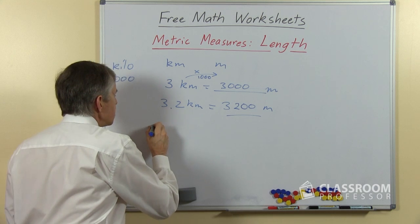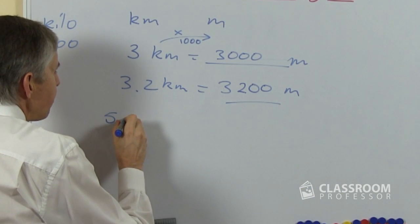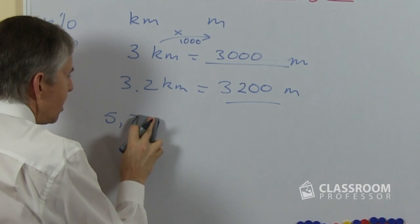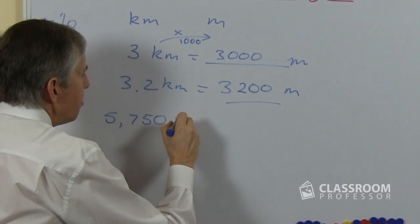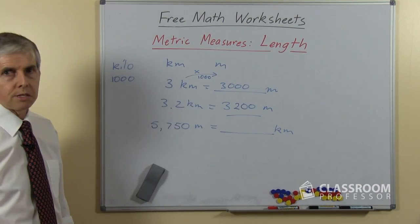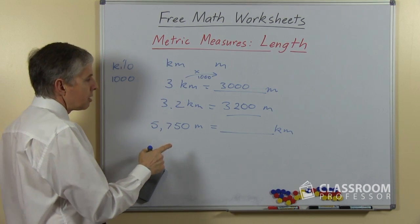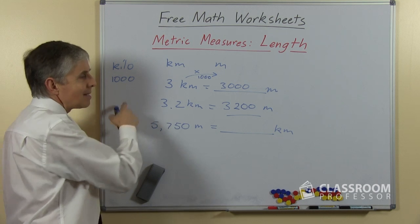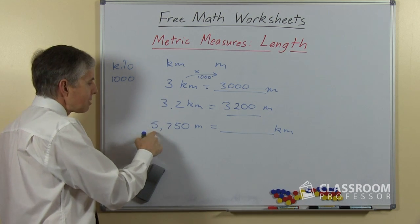In the opposite direction, supposing we had 5,750 meters, and we want to change that to kilometers. This time I'll ask you the question, where are the thousands? A thousand meters is a kilometer, so how many thousands are here? Here's the thousands place, 5.